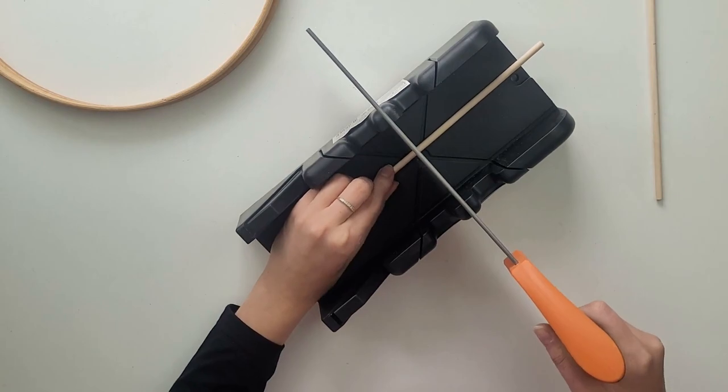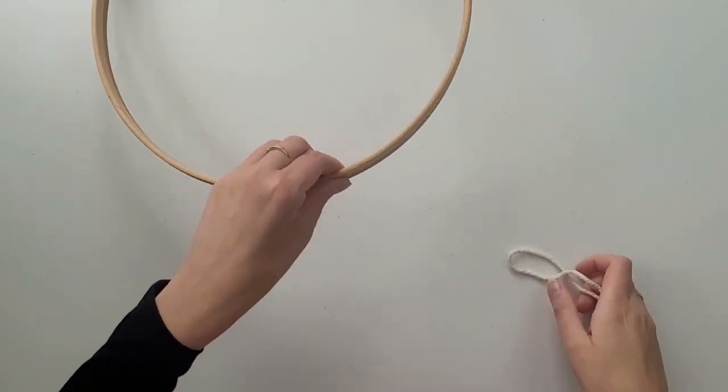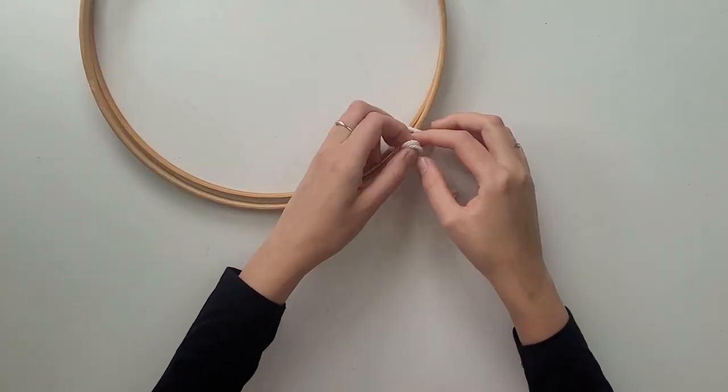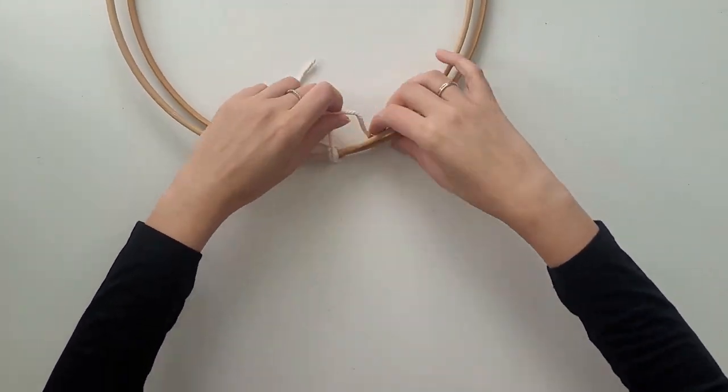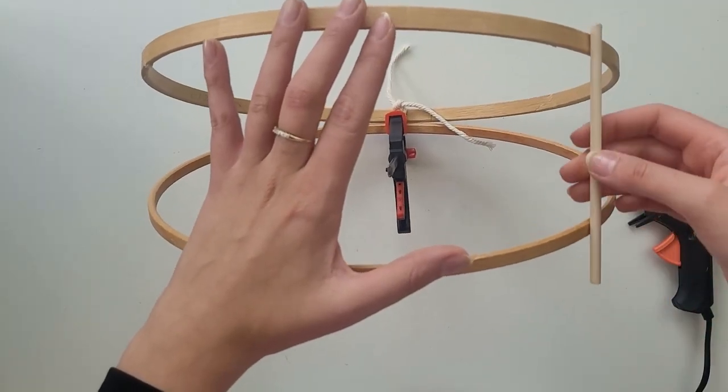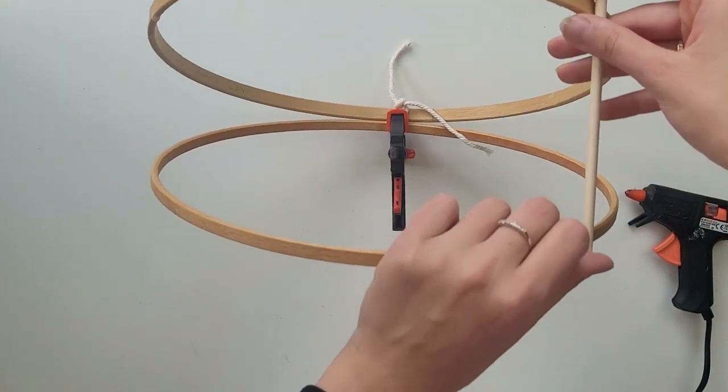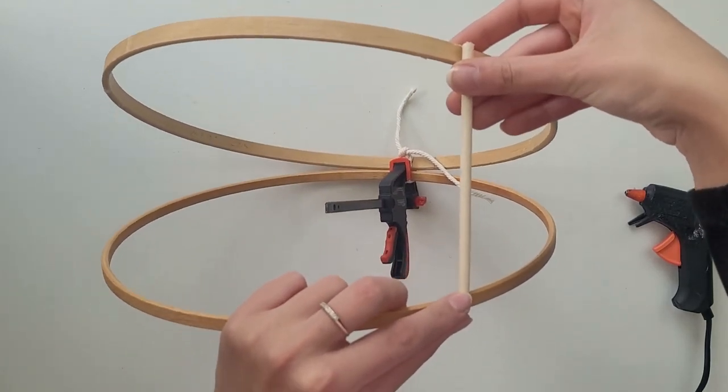I take the hoops together and just quickly make a knot around them. This is only temporary and I will go back to this part later on and make it nicer. For now I just want them to be connected in one place. I've also put one clamp to secure it even more.